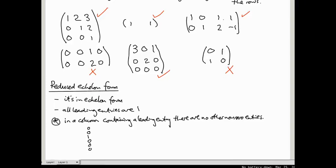So let's go back to our six matrices from the previous example and see which are in reduced echelon form. What about this first one? Well, it's in echelon form. So that's good. Its leading entries are one, one, one. They're all one. That's good.